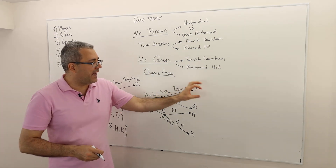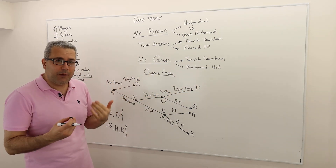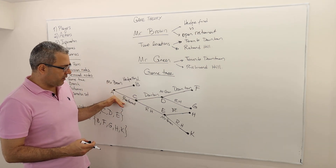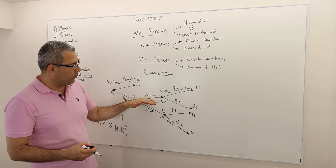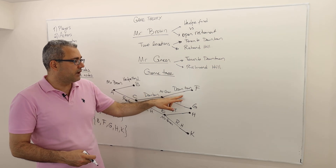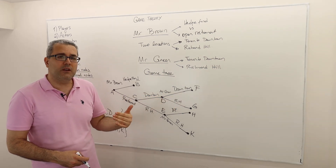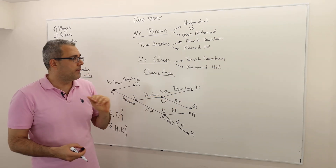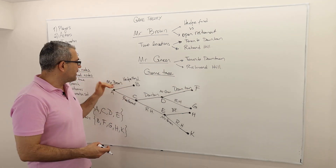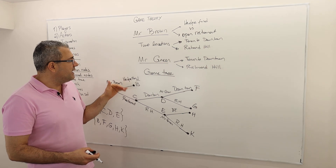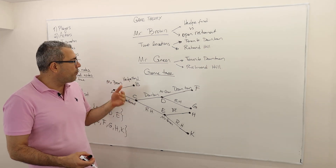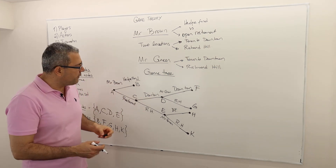The terminal nodes also tell us the time where the outcomes will be realized. For example, at point F, Mr. Brown decided to open a restaurant in downtown Toronto, and Mr. Green also decided to open a restaurant in downtown Toronto. That is the outcome F represents.